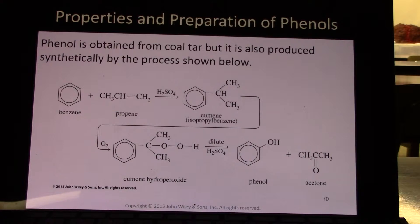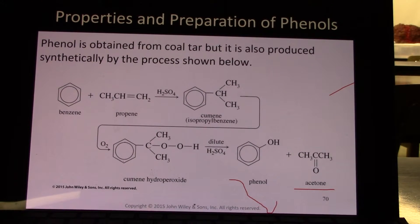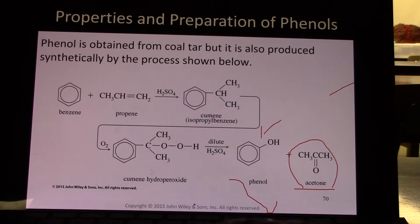Phenol is obtained from coal tar, but it is also produced synthetically. Benzene reacts with propene to form cumene, or isopropylbenzene. This is then oxidized to form cumene hydroperoxide, which then forms phenol in dilute sulfuric acid. A byproduct of that is acetone. This is actually why acetone is such a common solvent — you find it at Menards, Lowe's, in nail polish remover, and all sorts of industrial applications. It's super available because it's a byproduct of phenol synthesis.